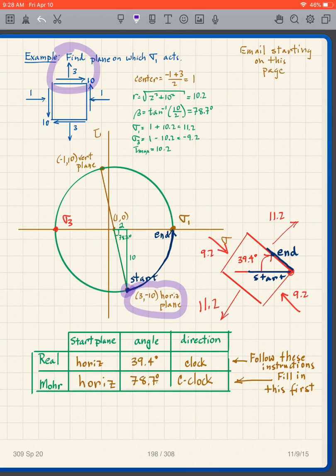What I want to do now is in Mohr go from the horizontal plane to sigma 1. What do I do? I start here, I end here. Where do I go? I go like that.